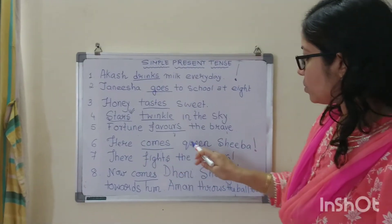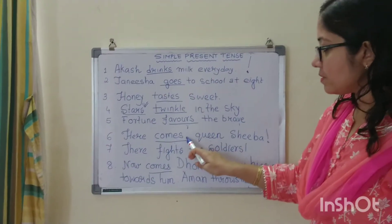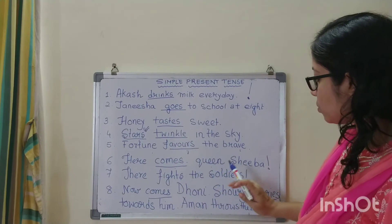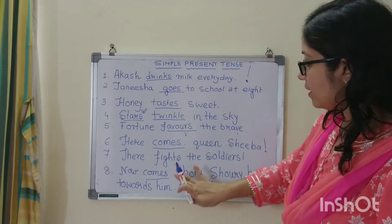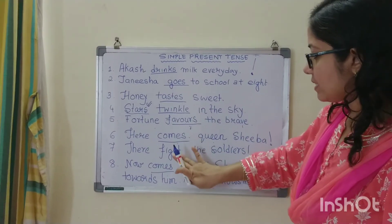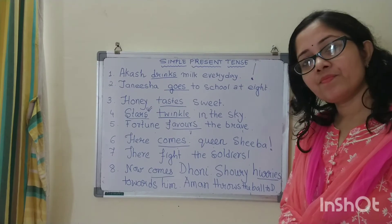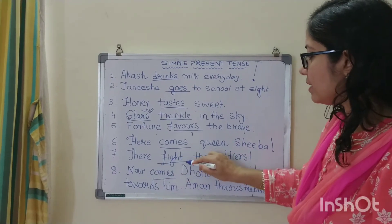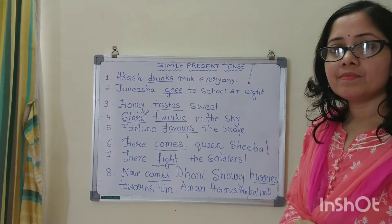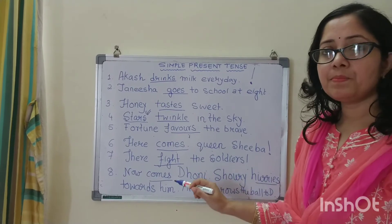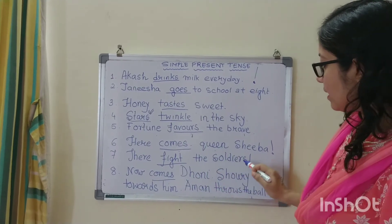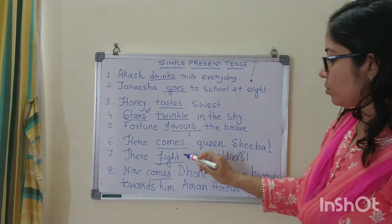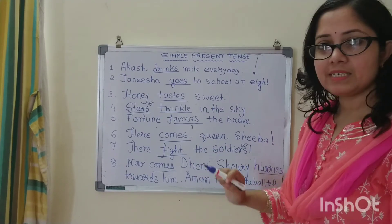Here comes queen Sheba — comes. There fight the soldiers — fight. Now here soldiers are plural, so I will use fight. These are the simple present tenses used in exclamatory sentences.